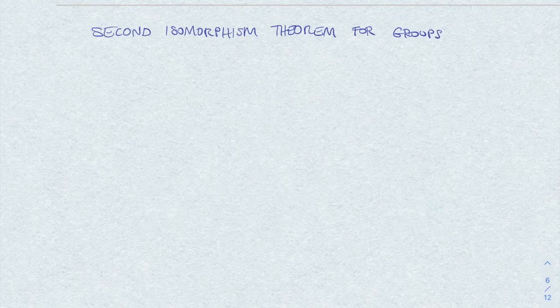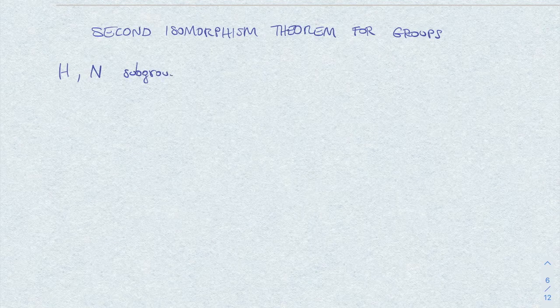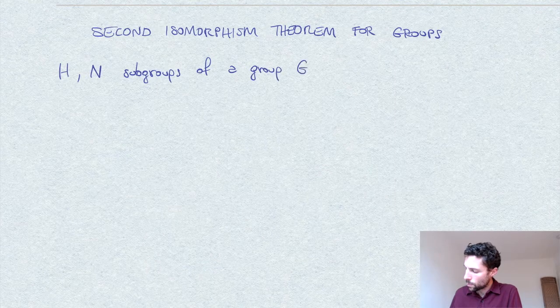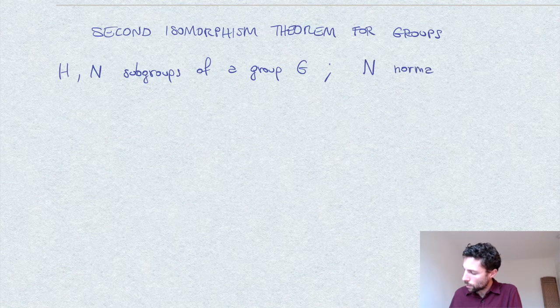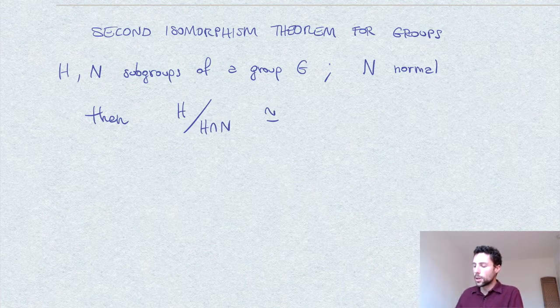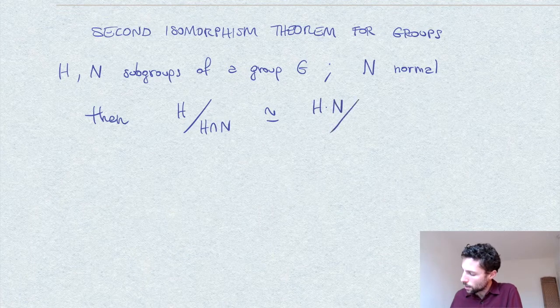I would like to give a proof of what is sometimes called the second isomorphism theorem for groups — sometimes the first isomorphism theorem; there is no standard name. The setting is that we have H and N subgroups of a given group G, and N is normal. The theorem states that the quotient of H by the intersection H∩N is isomorphic to the product HN quotient by N.